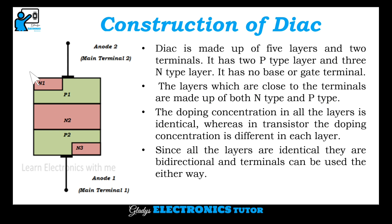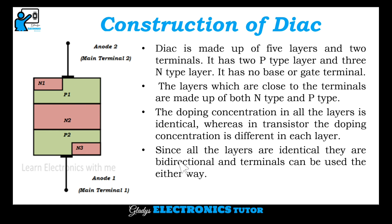This is the construction of DIARC. DIARC is made up of five layers — two P-type layers and three N-type layers. It has no base or gate terminal. The layers which are close to the terminals are made up of both N-type and P-type. The doping concentration in all the layers is identical, whereas in a transistor the doping concentration is different in each layer. Since all the layers are identical, they are bi-directional and terminals can be used either way.